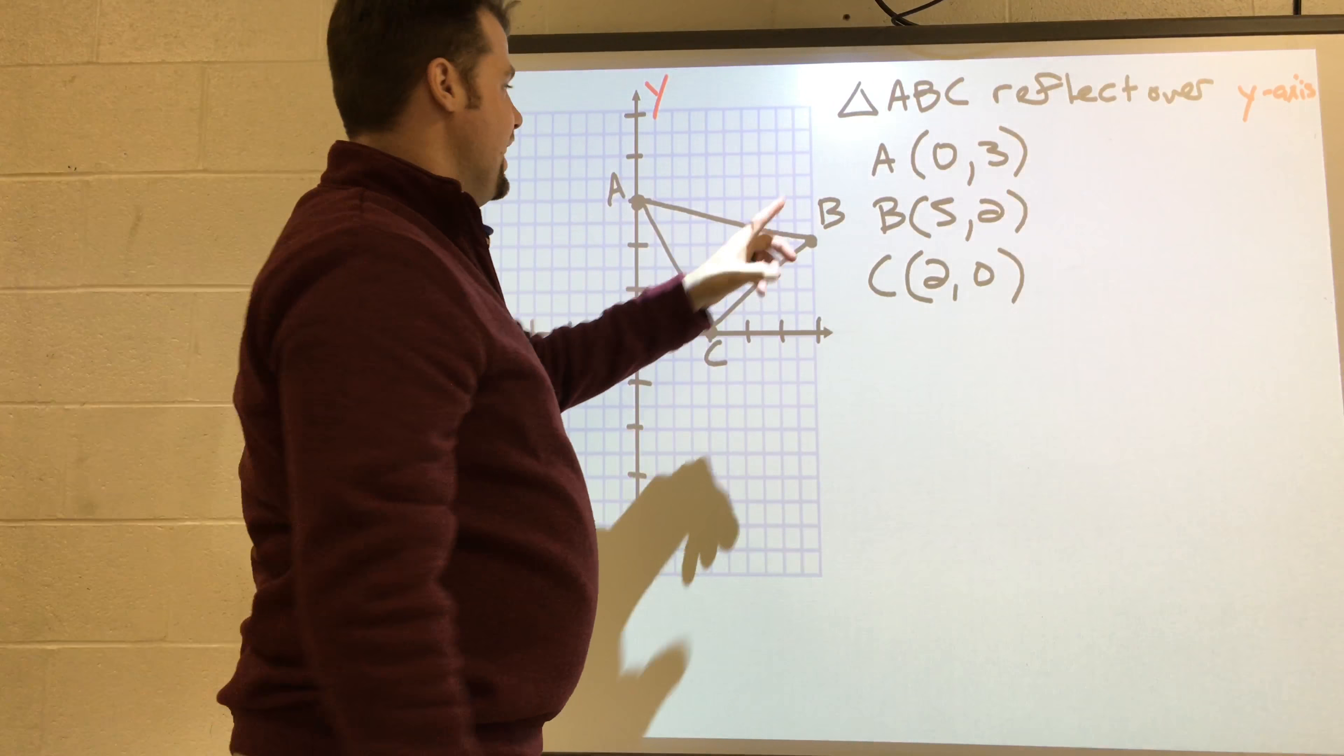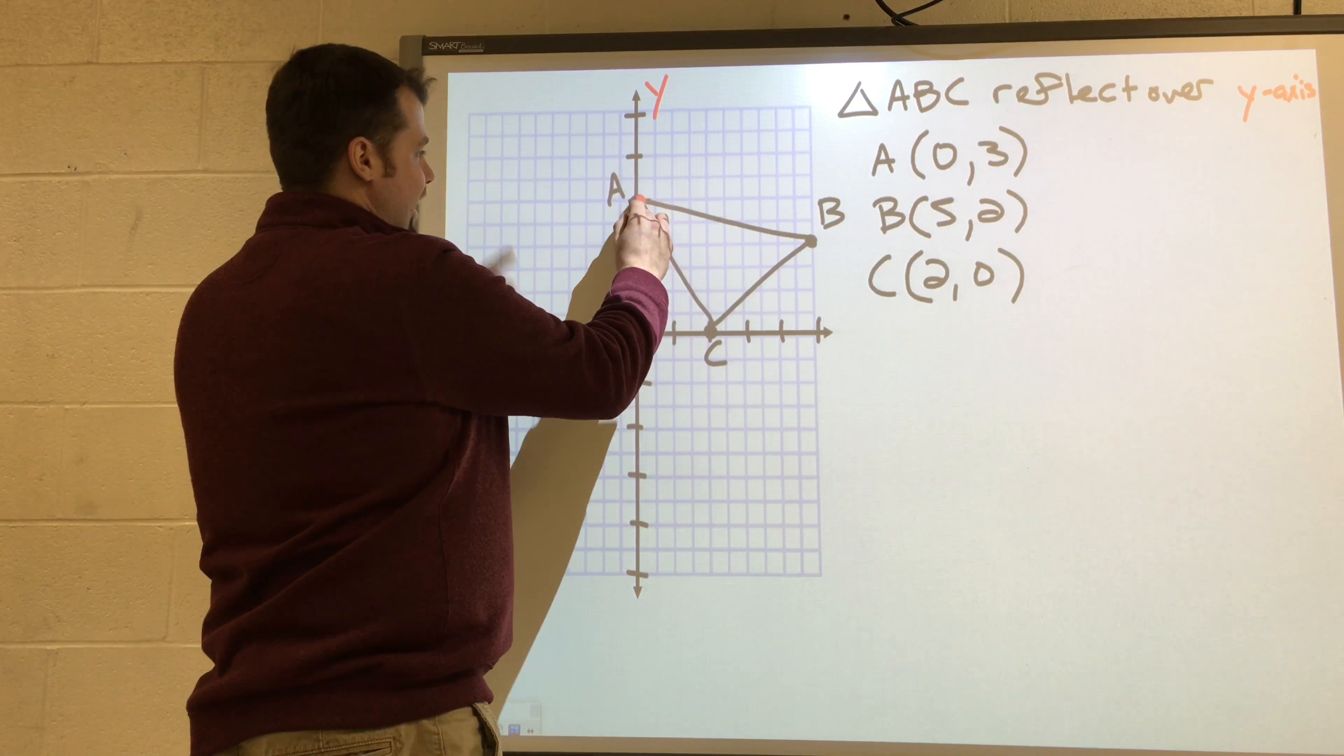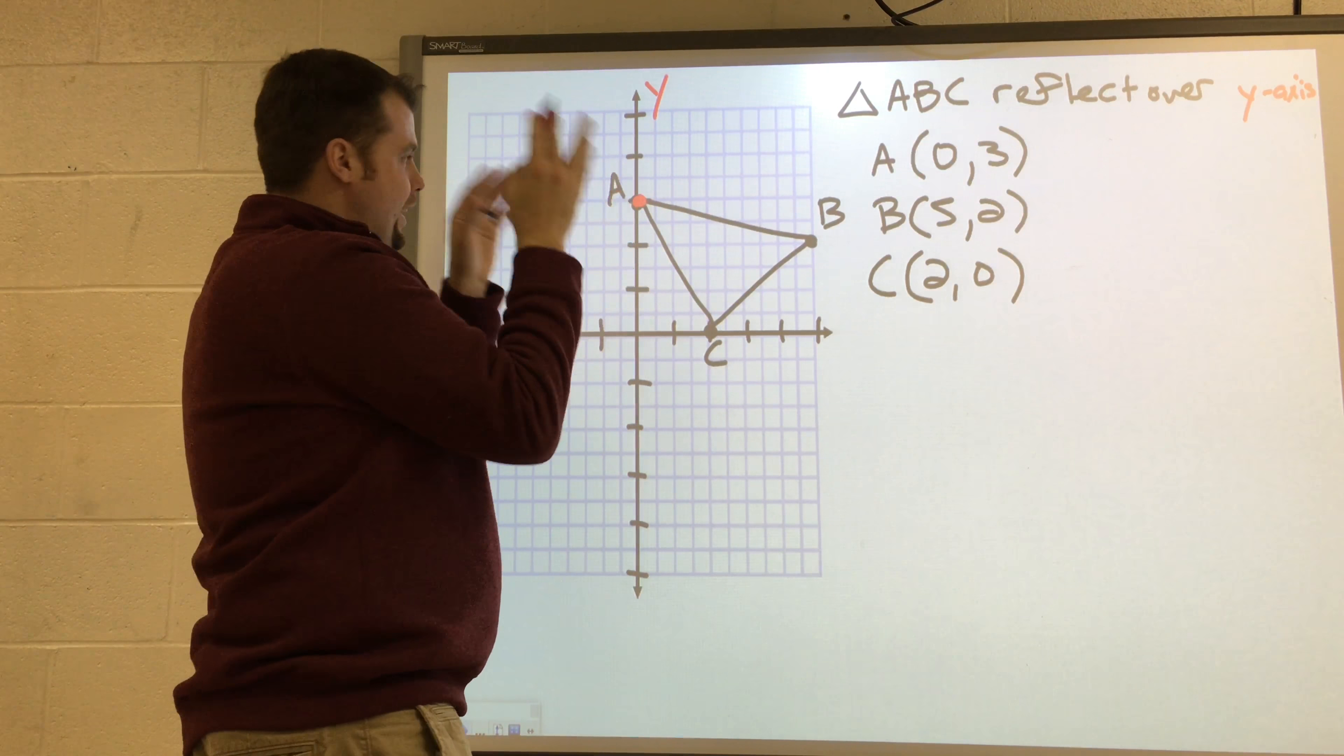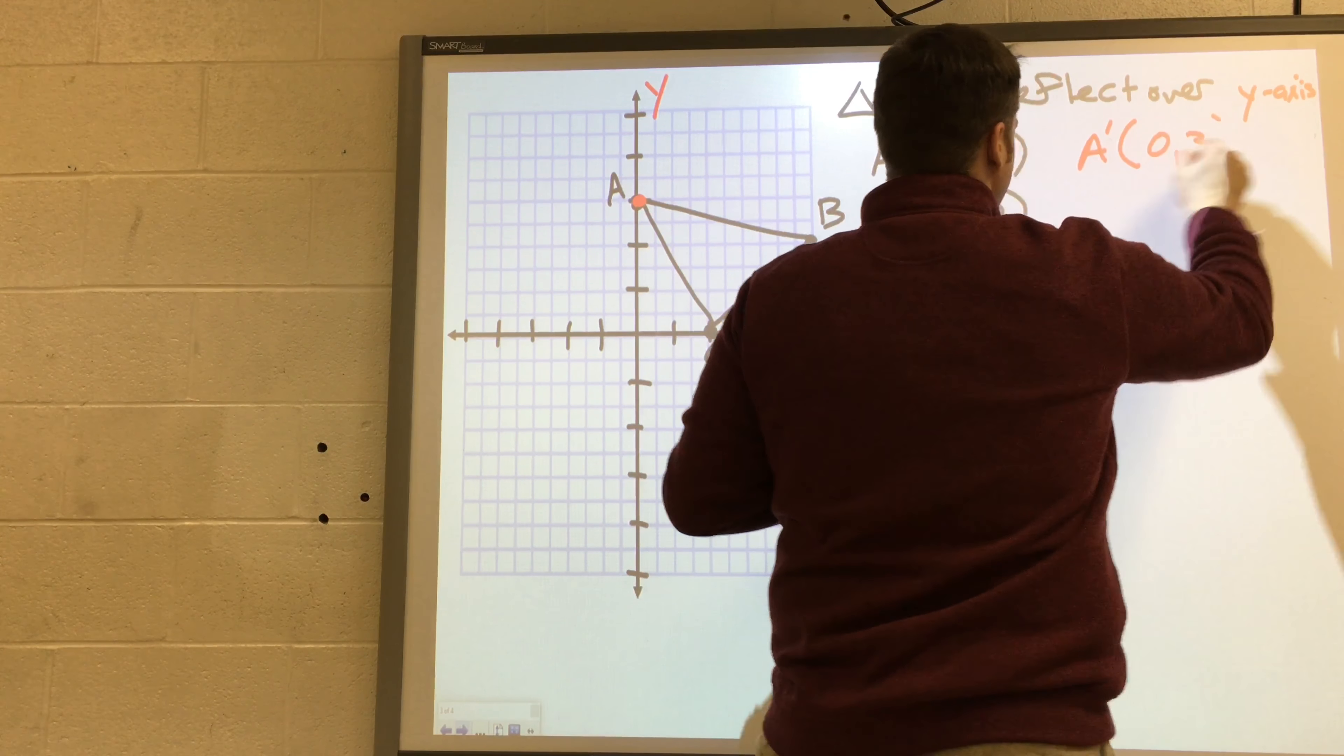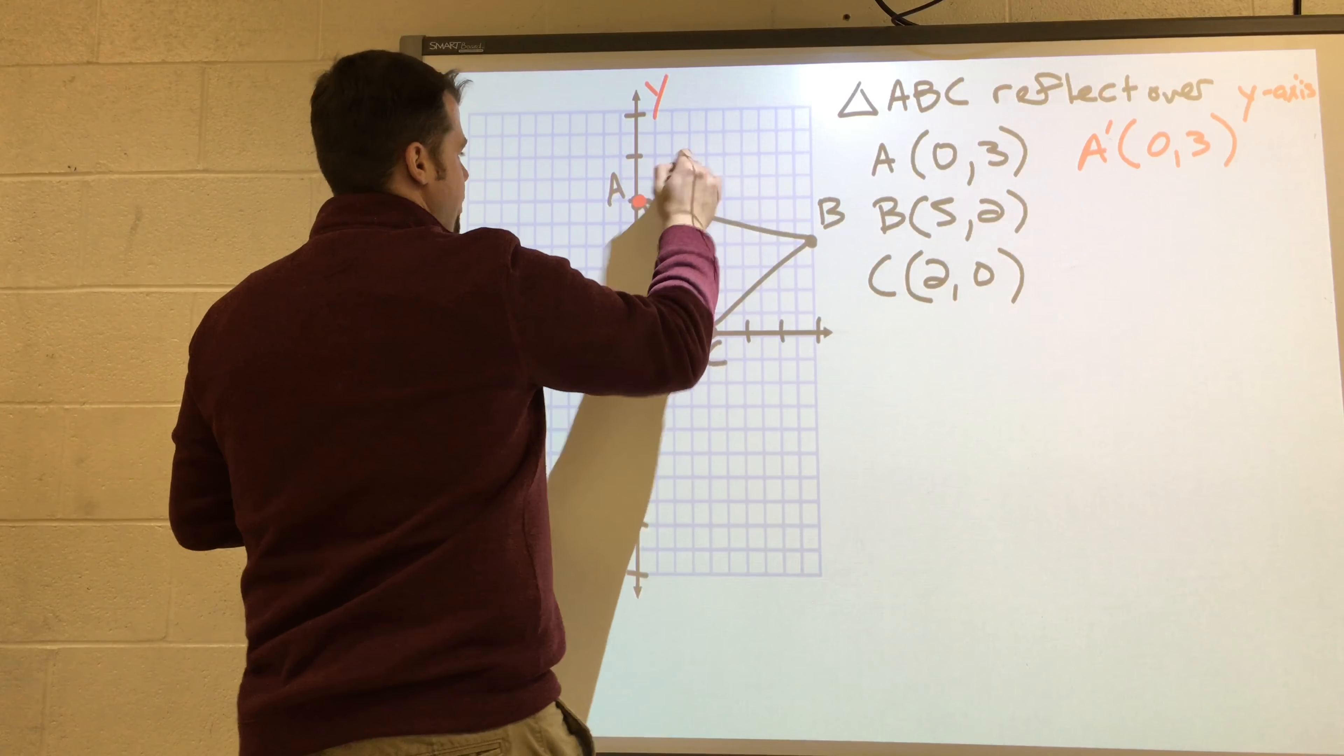So A is actually on the y-axis. I can't move it across. It's going to stay right there on the y-axis. So A prime is still going to say zero, three. That's A prime.